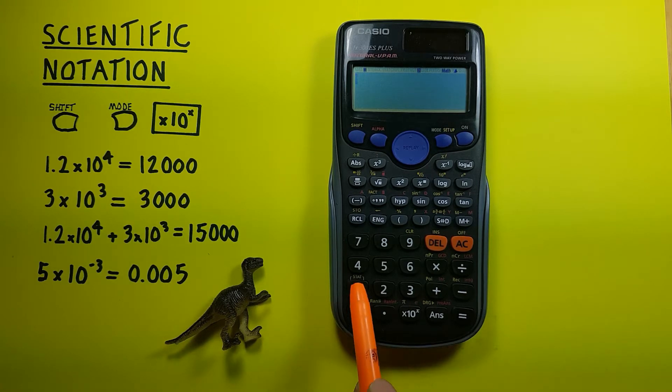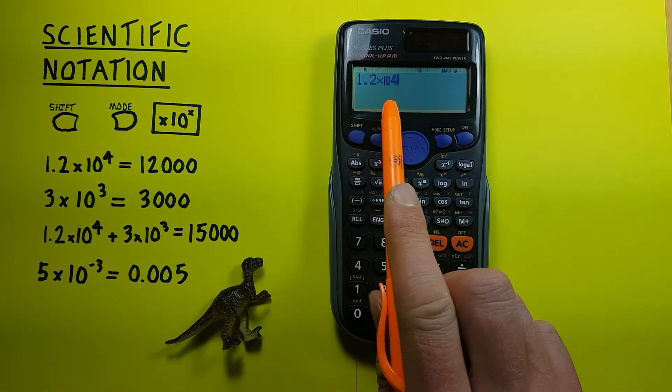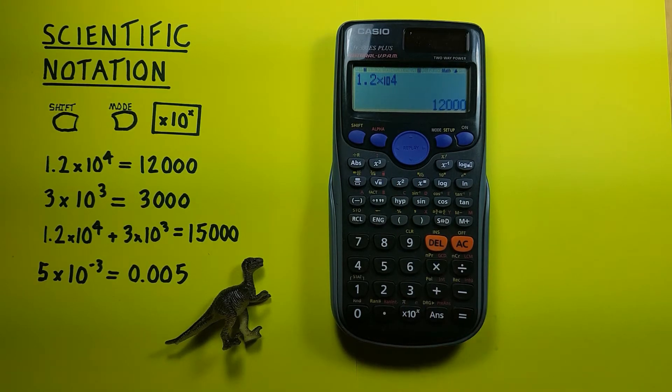We could do it by simply pressing 1.2 and then using the times 10 to the x key, and then the 4 which is our exponent. There you can see 1.2 times 10 to the fourth, and we press equals, and we see that this gives us 12,000.